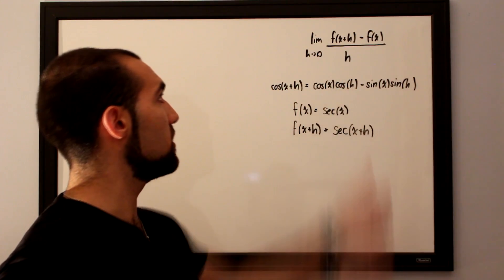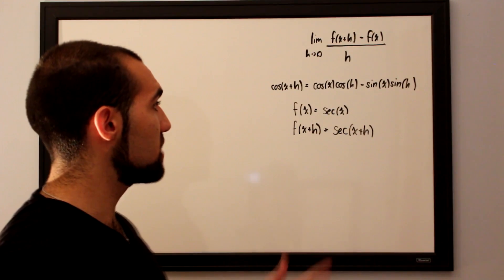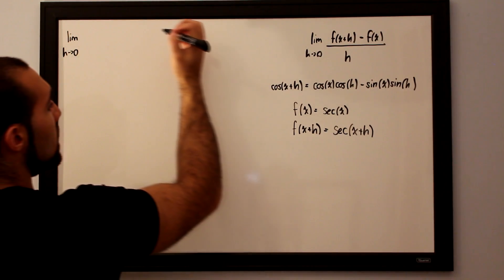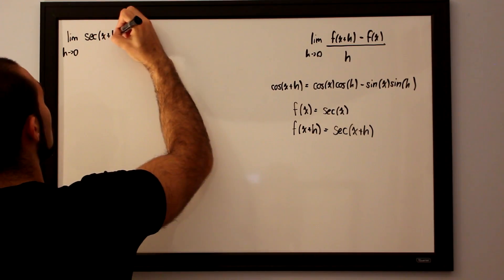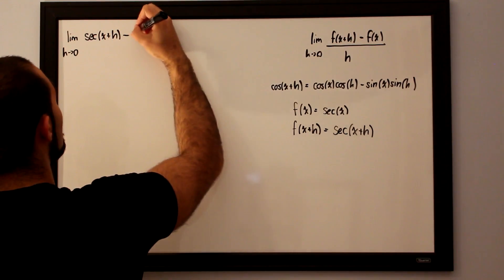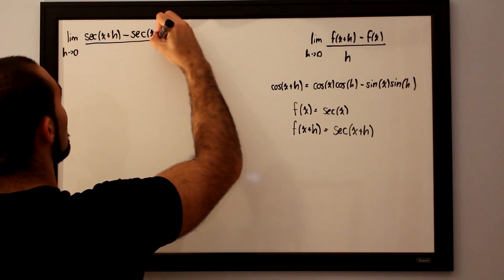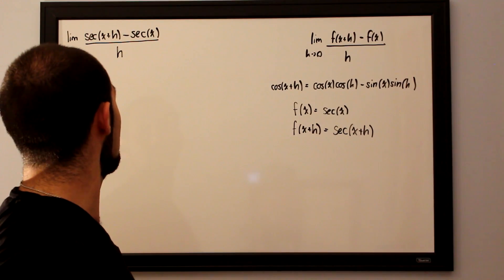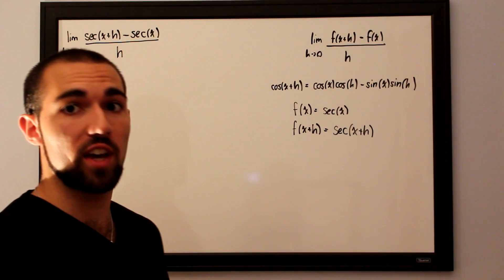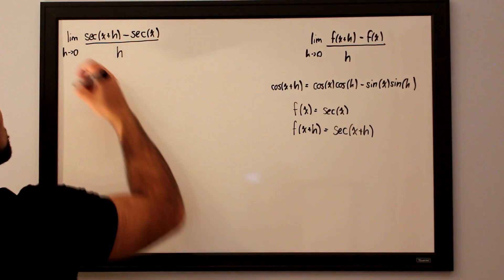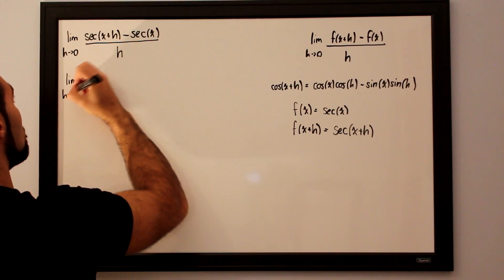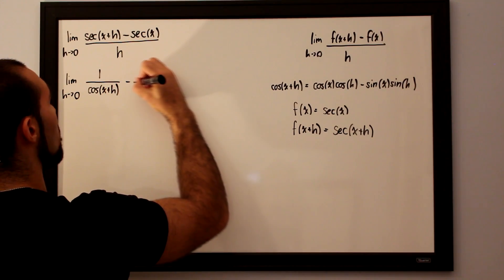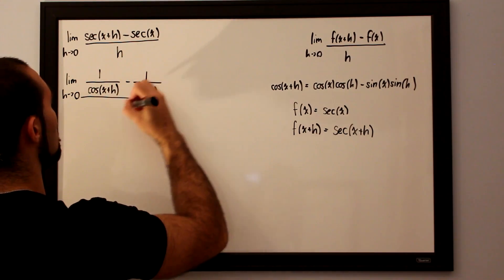Now we're ready and we can plug it into the formula. We want to take the limit as h approaches 0 for f of x plus h, which is secant of x plus h, minus our initial function, which is secant of x, all divided by h. Secant is simply the inverse of cosine, so we can rewrite this as 1 over cosine of x plus h minus 1 over cosine of x, all divided by h.